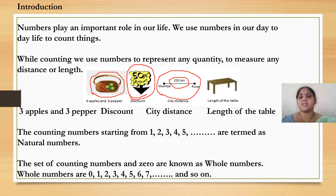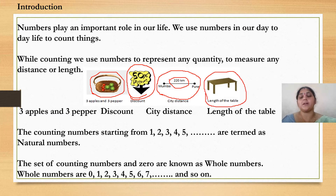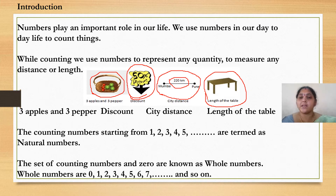The last one is the table. If you observe here, you will be checking the starting point and the last point — that is the length, that is also a distance. But the smaller distance is known as length. For the table, we will be calculating only length.